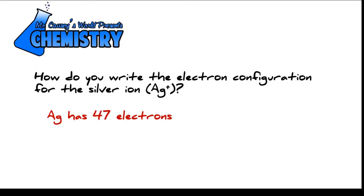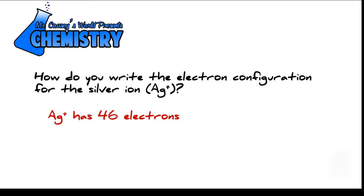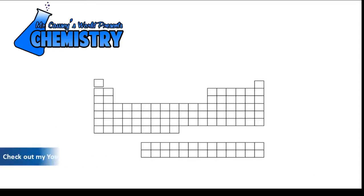Silver has 47 electrons, which means the ion has lost one, that's a cation actually, and it's lost one electron, so there are 46 electrons.